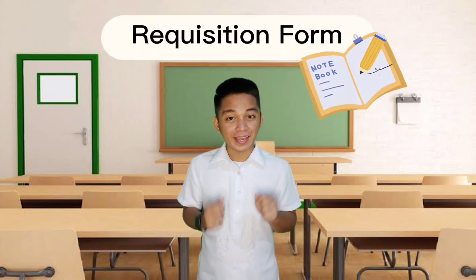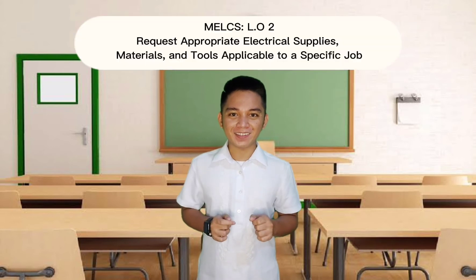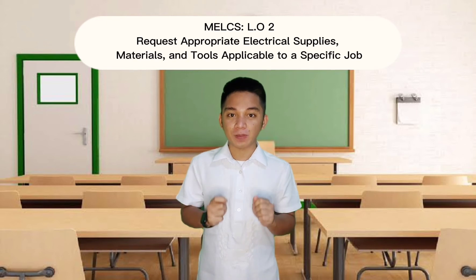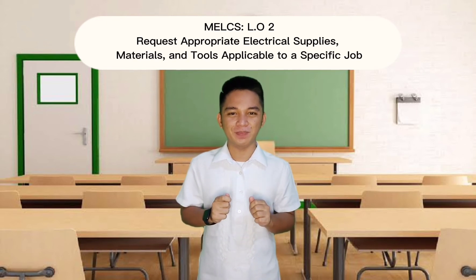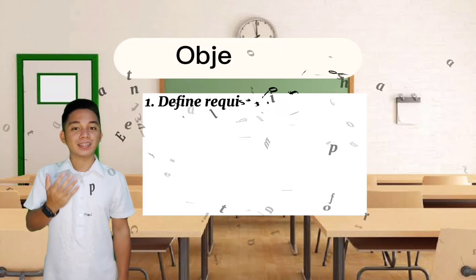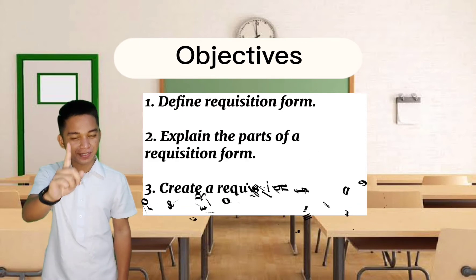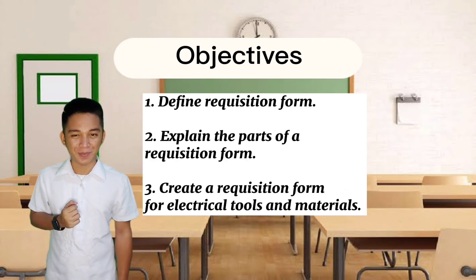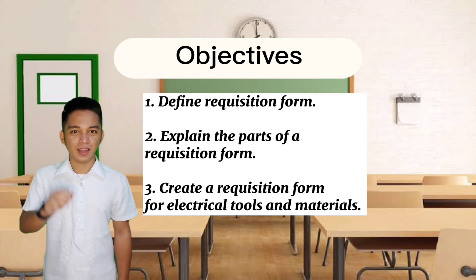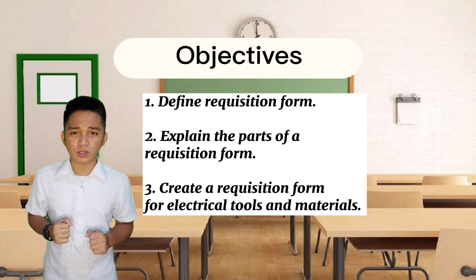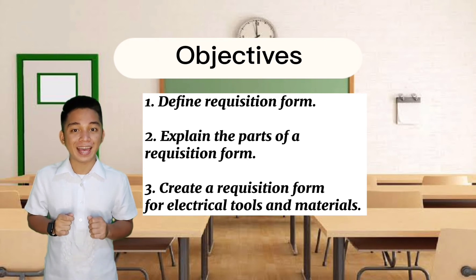Today, you are going to learn about creating a requisition form. This is under Learning Outcome 2, entitled Request Appropriate Electrical Supplies, Materials, and Tools Applicable to a Specific Job. Our objectives are the following: first, define what a requisition form is; number 2, explain the parts of a requisition form; and 3, create a requisition form for electrical tools and materials.